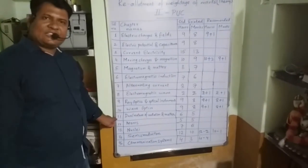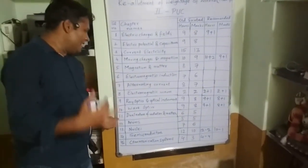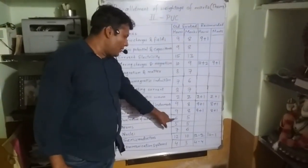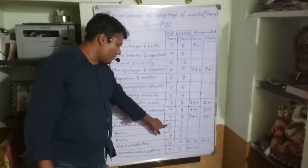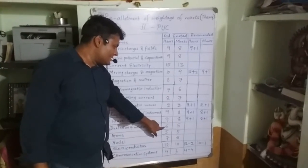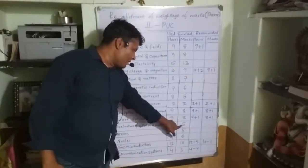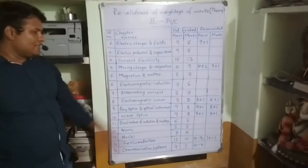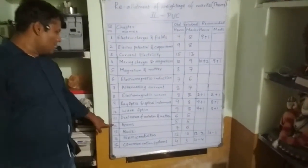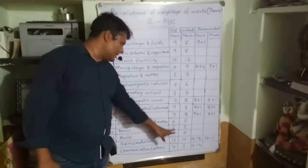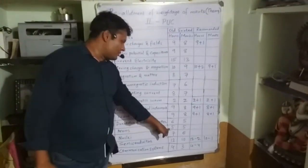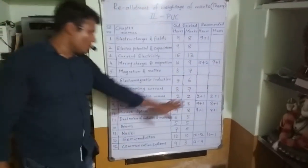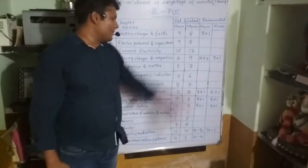The eleventh chapter, Dual Nature of Radiation and Matter, has six teaching hours and five marks in the old syllabus. No changes have been made. The twelfth chapter, Atoms, has five hours of teaching and five marks weightage, and no changes have been made in the recommended section either.